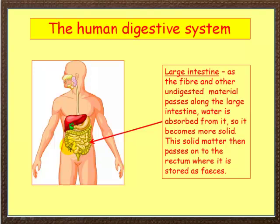If you've got an infection like diarrhoea, the undigested waste doesn't have enough time for the water to be removed. So what happens is it passes through too quickly, meaning your waste is very runny. The water isn't reabsorbed — that's what happens in diarrhoea.